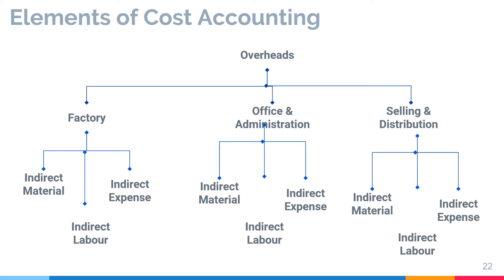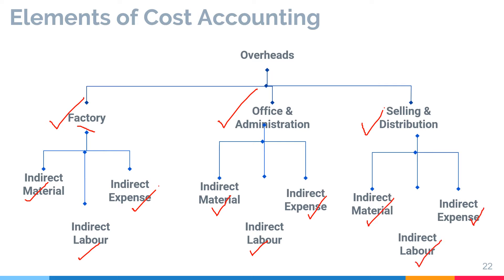Overheads are divided into three parts: factory overheads, office and administration overheads, and selling and distribution overheads. Each category contains indirect material, indirect labor, and indirect expenses. Let's understand the examples of what falls under each category.